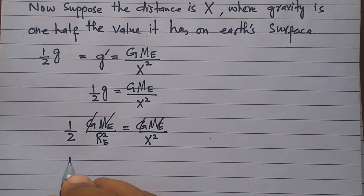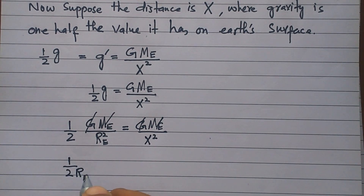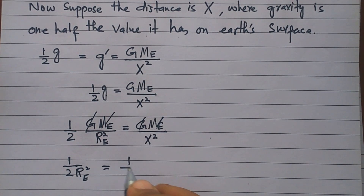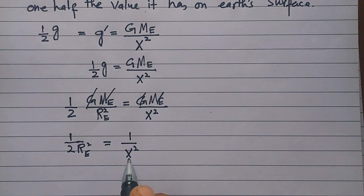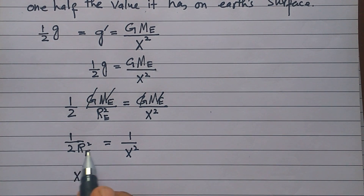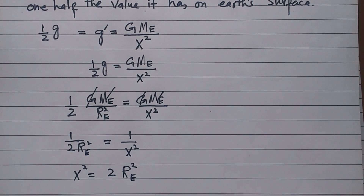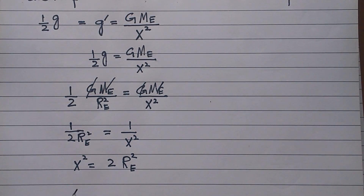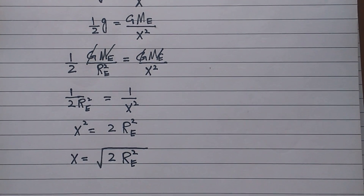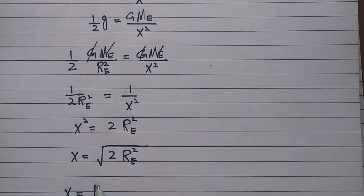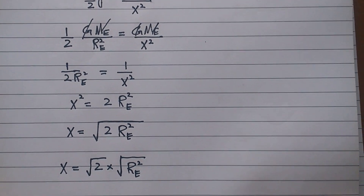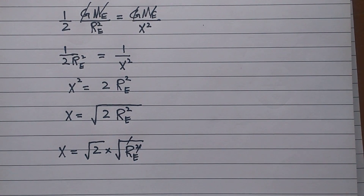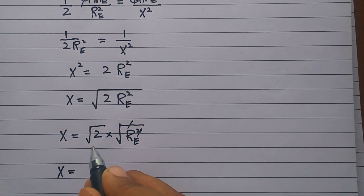We have one upon two, multiply R_E squared, is equal to one upon x squared. Cross multiplying, x squared equals two R_E squared. Applying the square root to both sides, we get x equals root 2 times R_E.